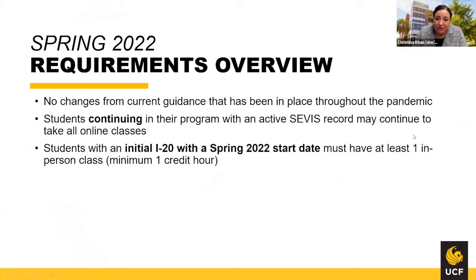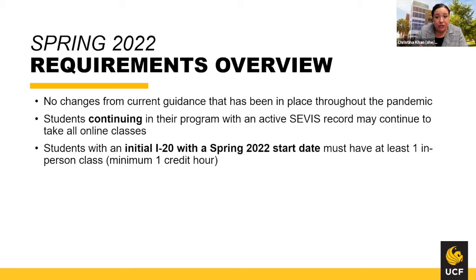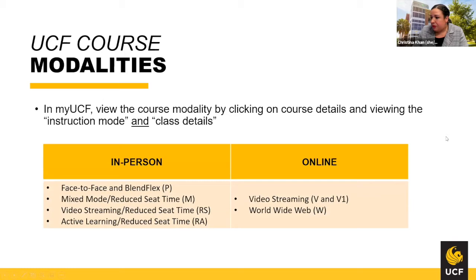Guidance for spring 2022: the great news is there are going to be no changes from the current guidance that's been in place throughout the pandemic. International students still have flexibility regarding online courses. Students who are continuing with an active SEVIS record may continue to take all online classes. However, students who have an initial I-20 with a spring 2022 start date — whether brand new students or returning students — must have at least one credit that is an in-person course.